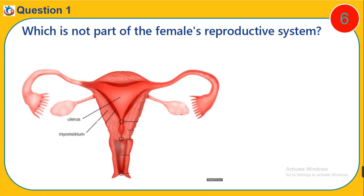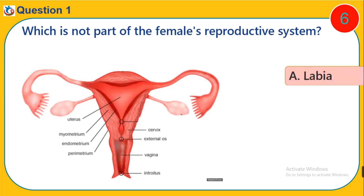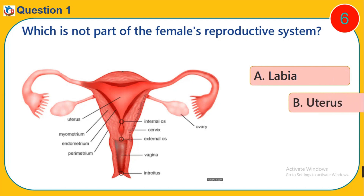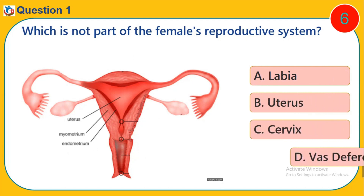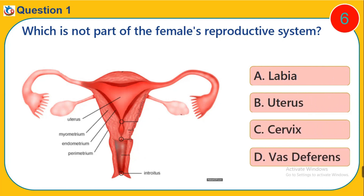Question 1. Which is not part of the female's reproductive system? A. Labyrinth. B. Uterus. C. Cervix. D. Vas deferens.